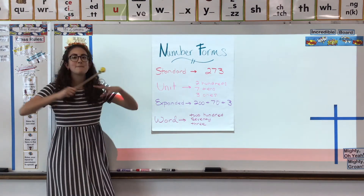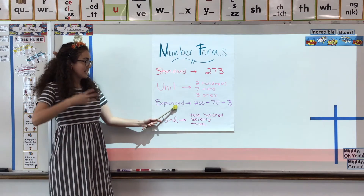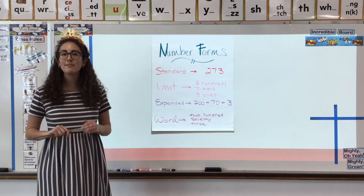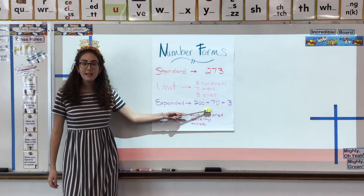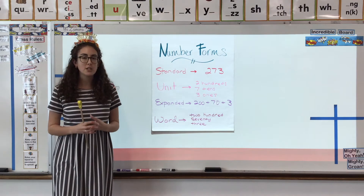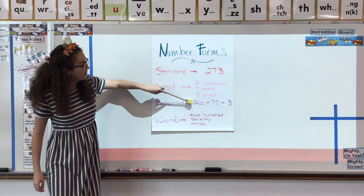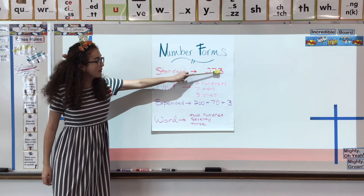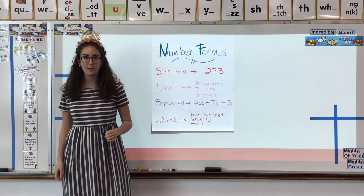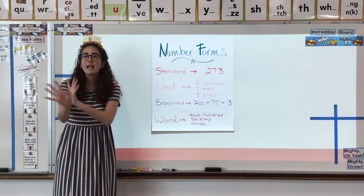Then we also learned expanded form. Expanded form is when we made an addition sentence that matched the value of our number. In expanded form, we wrote out the value of each digit — how much was each digit worth depending on its place. So the two is worth 200, seven is worth 70, and the three is worth three. So these are all four different ways we learned, second grade. We've just been comparing standard form to standard form, but today we're going to mix it up.